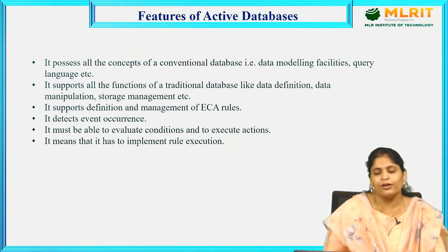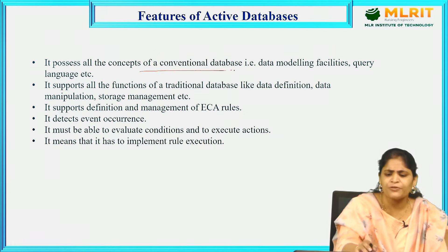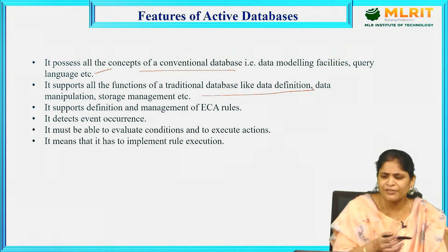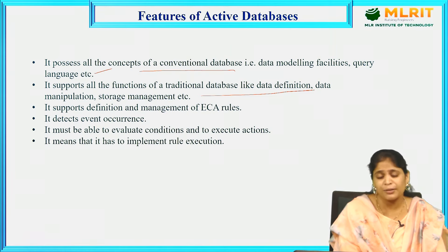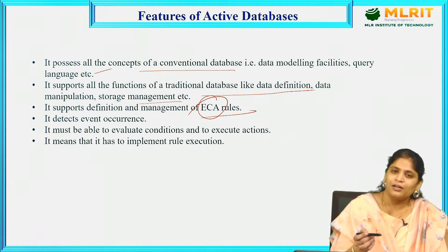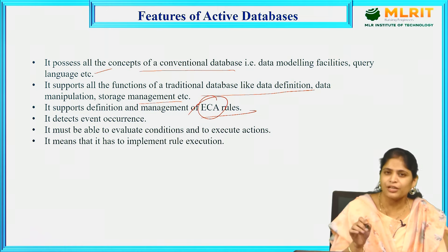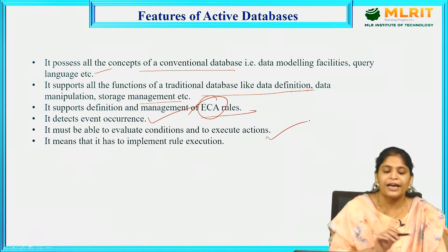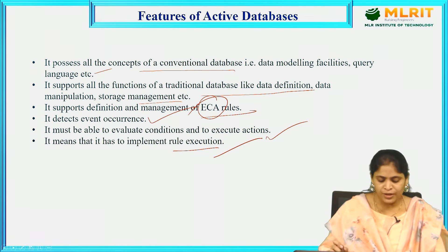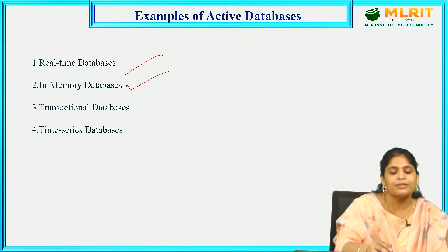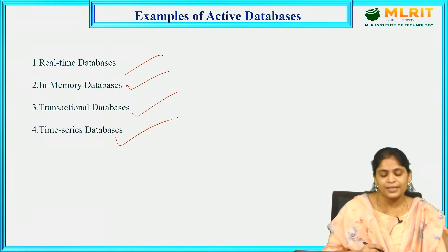Features of active databases: they possess all the concepts of conventional databases — data modeling, query languages, etc. They support all traditional database functions including DDL, DML, DCL, and TCL commands, as well as storage management. They support definition and management of ECA rules — event, condition, and action. When an event is activated, it checks the condition; if the condition is true, the action executes. Active databases detect event occurrences and implement rule execution. Types include real-time databases, in-memory databases, transactional databases, and time series databases.